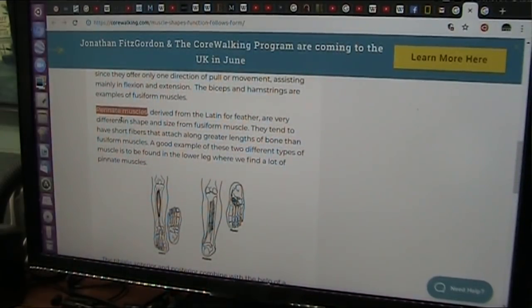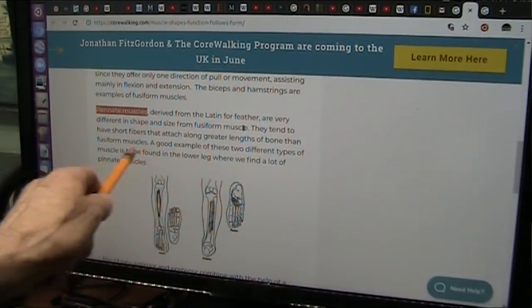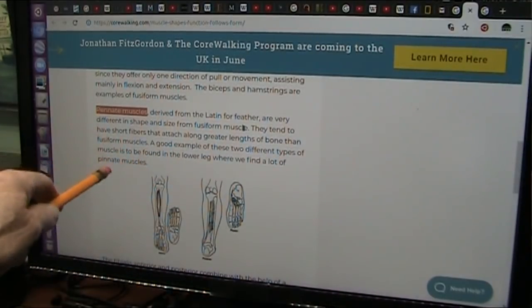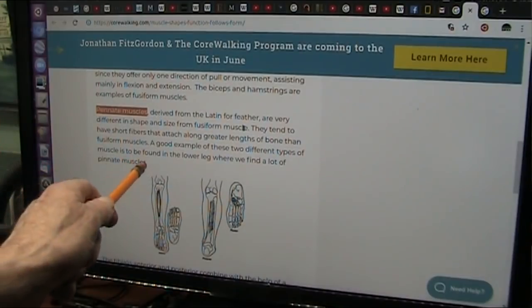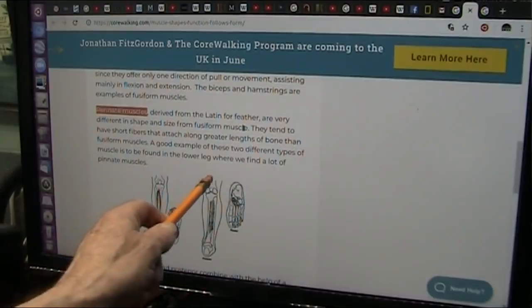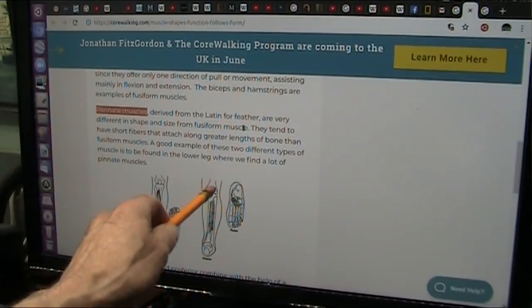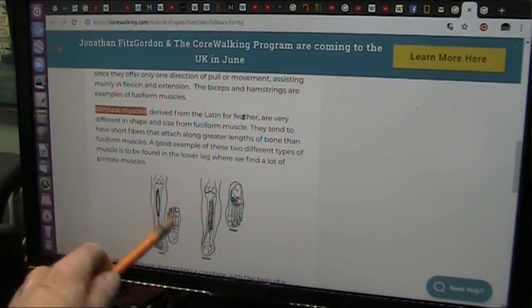These are pennate muscles. It's derived from the Latin for feather. They're very different in shape and size from fusiform muscles, the long muscles. They're short fibers. They attach along greater lengths of the bone than fusiform muscles like your biceps. A good example of these two different types of muscles can be found in the lower leg where we find a lot of pinnate muscles. They go between the fibula and the tibia and they sort of strap them together.